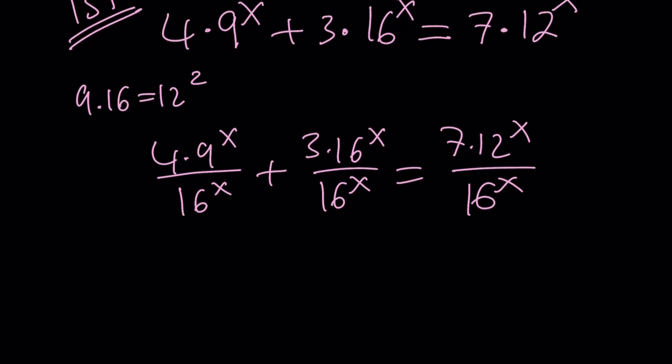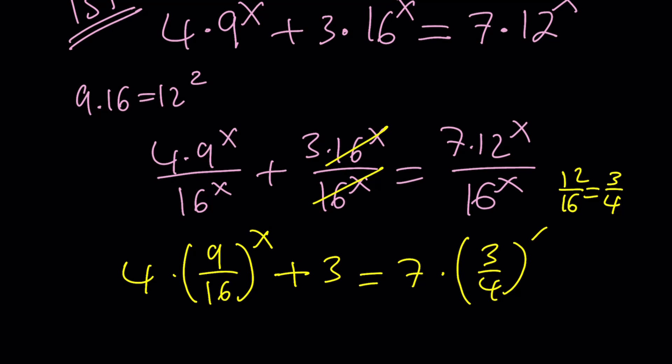And 16 to the power x is going to cancel out, leaving us with the number. And then we can write this as 4 times 9 over 16 to the power x, because we have a common exponent, plus 3 equals 7 times 12 over 16 to the power x. But 12 over 16 can actually be simplified and written as 3 over 4. So let's go ahead and write it as 3 over 4 to the power x.